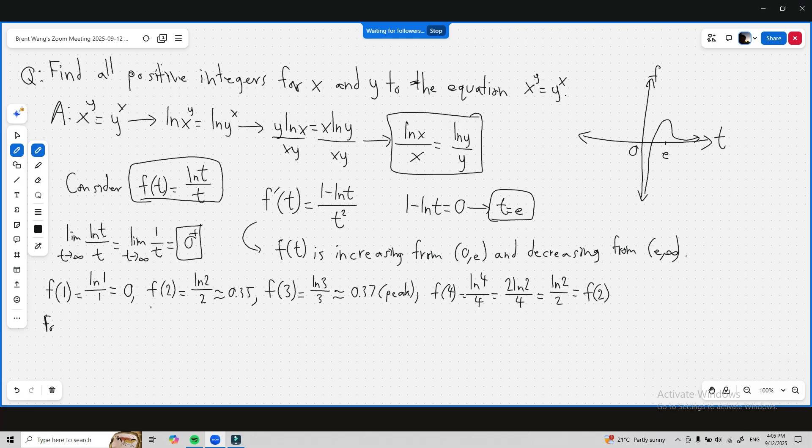So f of 2 and f of 4 are the same. For t greater than or equal to 5, we have 0 equals f of 1 which is less than f of t.